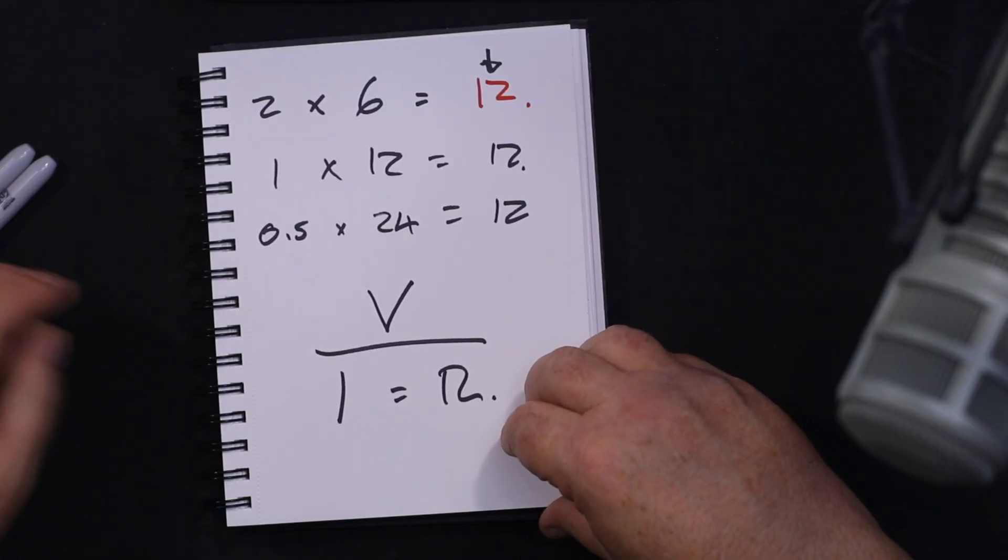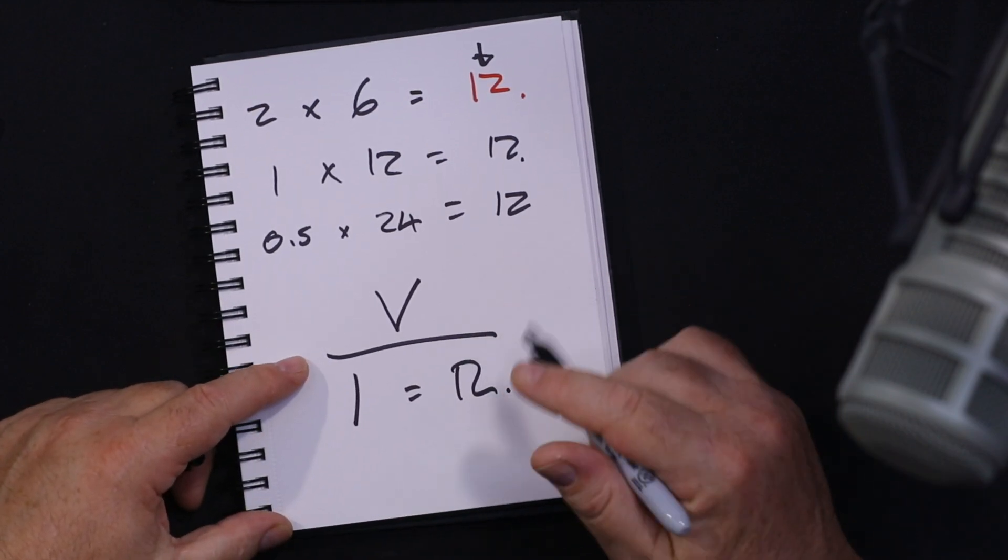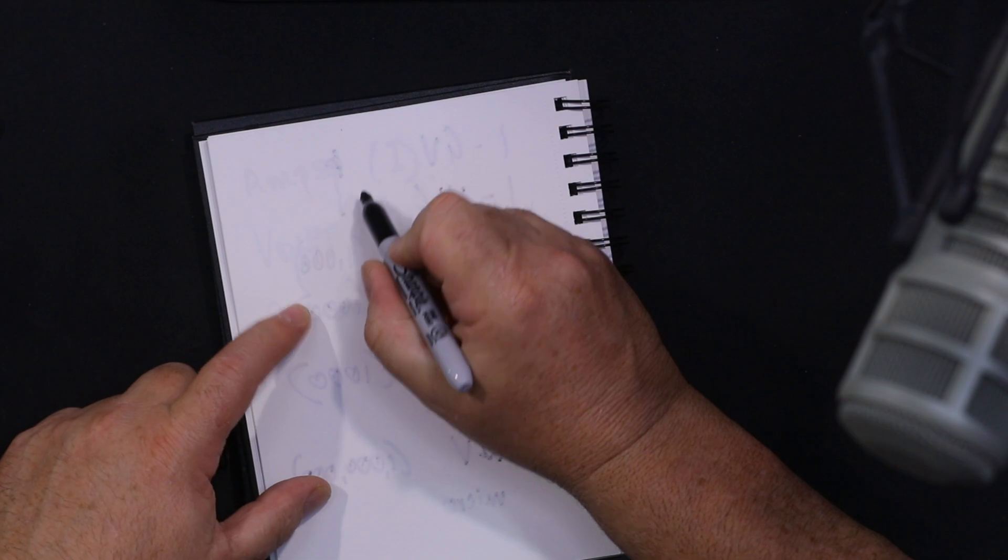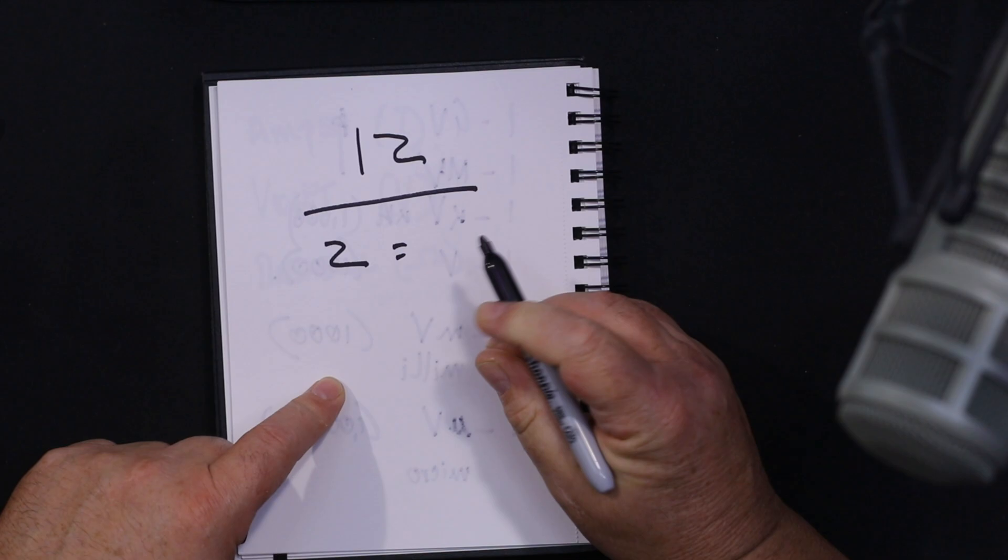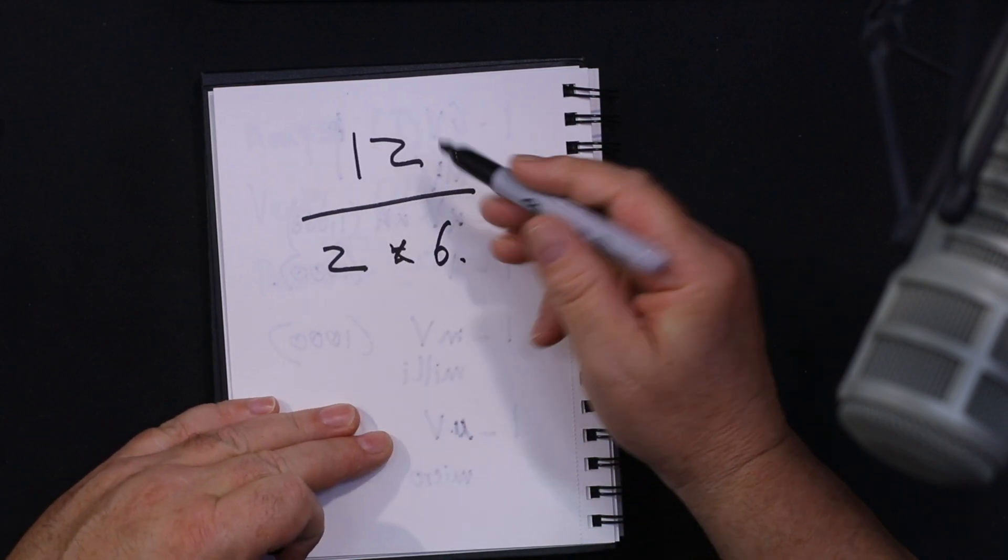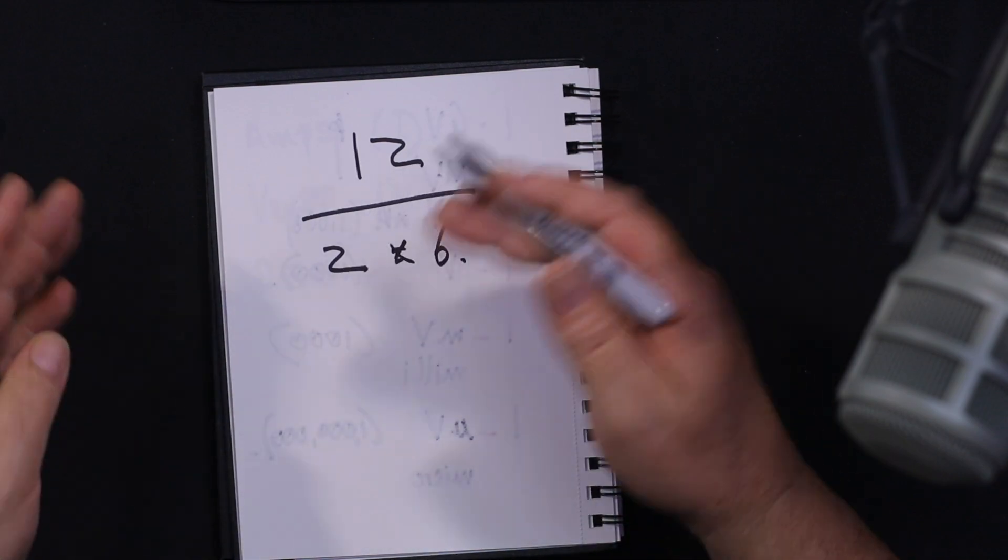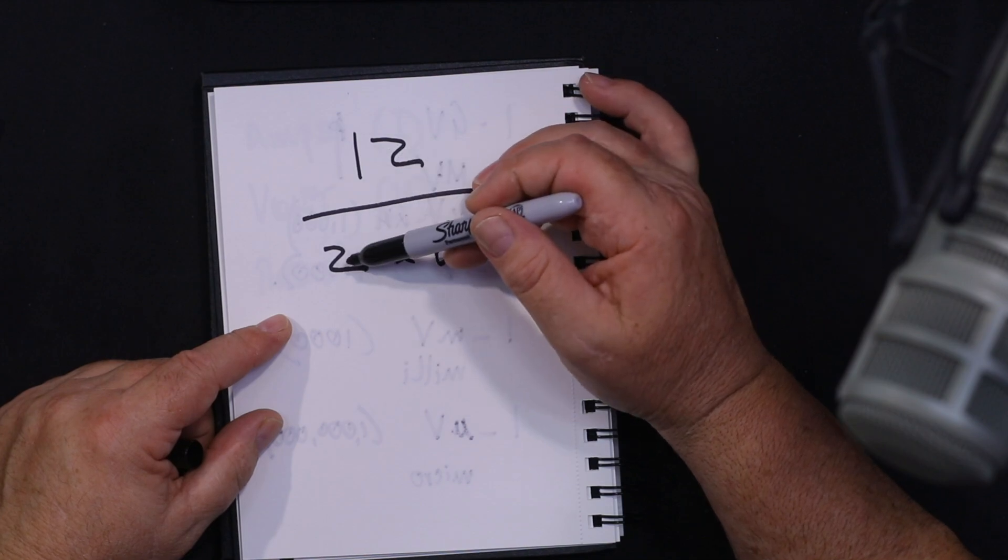So what does V over I actually mean? Well we could use these numbers that we've just done and show you. Let's say we have 12 divided by 2. What is the answer? Yes, 2 times 6 is 12. So it doesn't matter. This puzzle again, it doesn't matter if you divide 12 by 6 is 2, or 12 by 2 is 6.